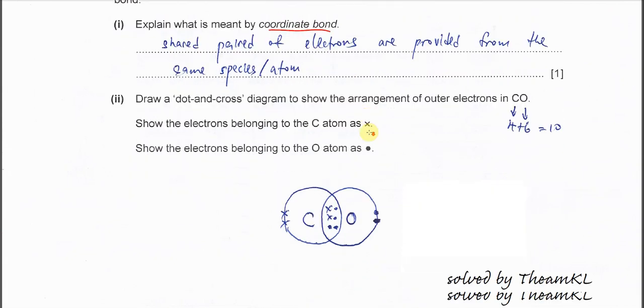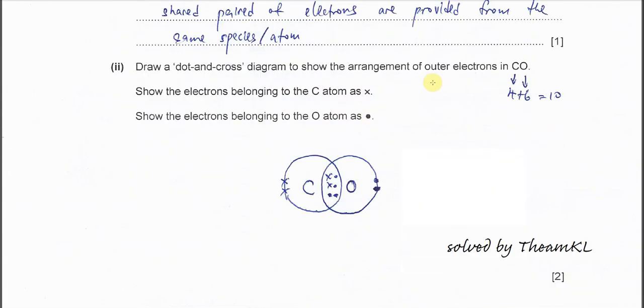Draw a dot-cross diagram for carbon monoxide, just the outer electrons only. First you need to make sure the total number of electrons is 10. Carbon has 4 valence electrons, oxygen has 6 valence electrons. In your dot-cross diagram, you must show 10 electrons there.